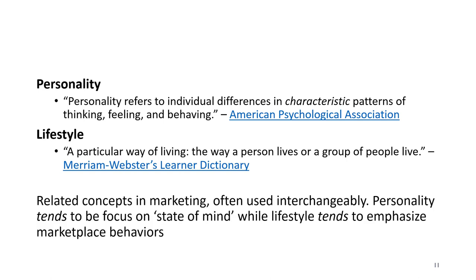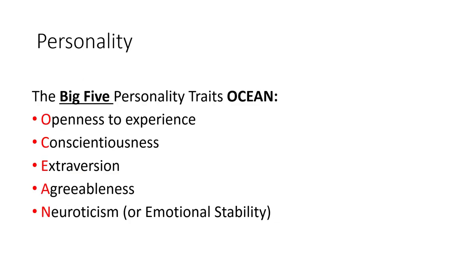Similarly, for lifestyle, we're referring to a particular way that someone lives — the way a person or group of people tend to live their lives. These are related concepts, and in marketing they are sometimes used interchangeably. However, in the world of marketing research, when we refer to personality we tend to be focusing on the individual's state of mind. While lifestyle, as used in marketing, tends to emphasize actual marketplace behaviors — the things that people actually do out there in the world. That said, when marketers use the word lifestyle we are often talking about both marketplace behaviors as well as the way people are thinking and feeling.